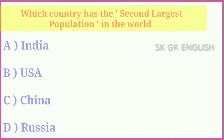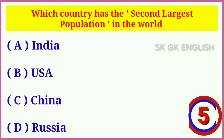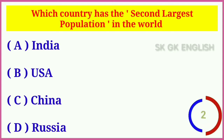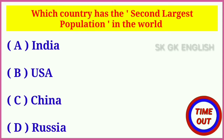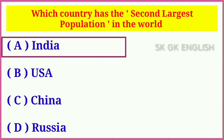Question number three: Which country has the second largest population in the world? Options are: A. India, B. USA, C. China, D. Russia. Correct answer is A. India.